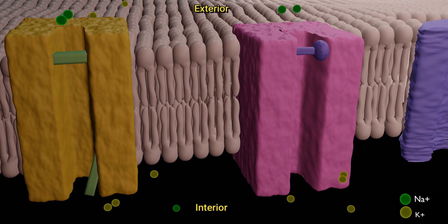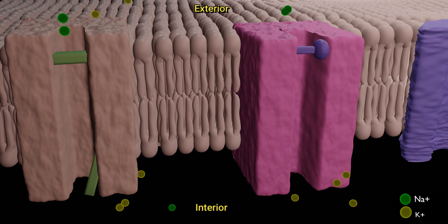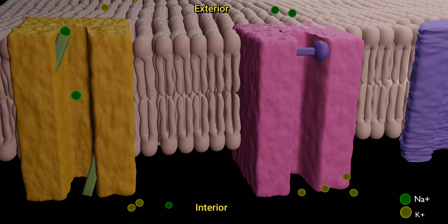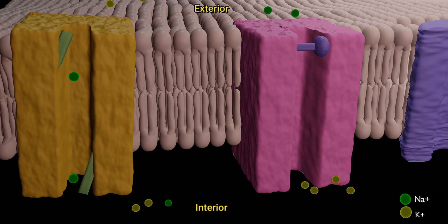Na+ and K+ voltage dependent channels act according to the concentration gradient but open only upon an effective stimulation.